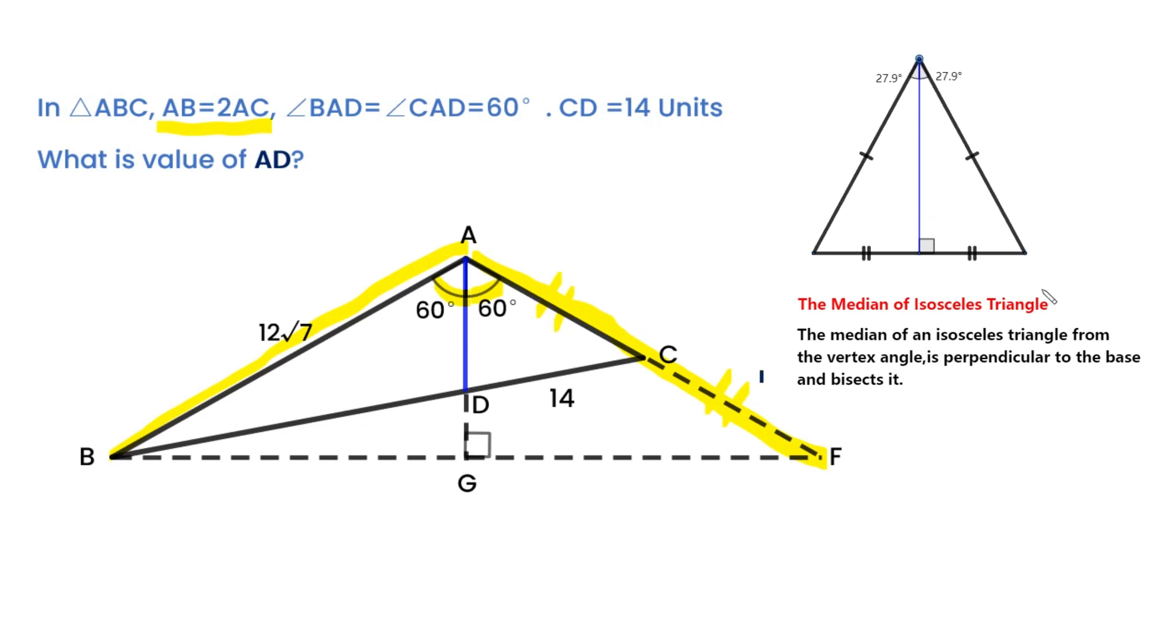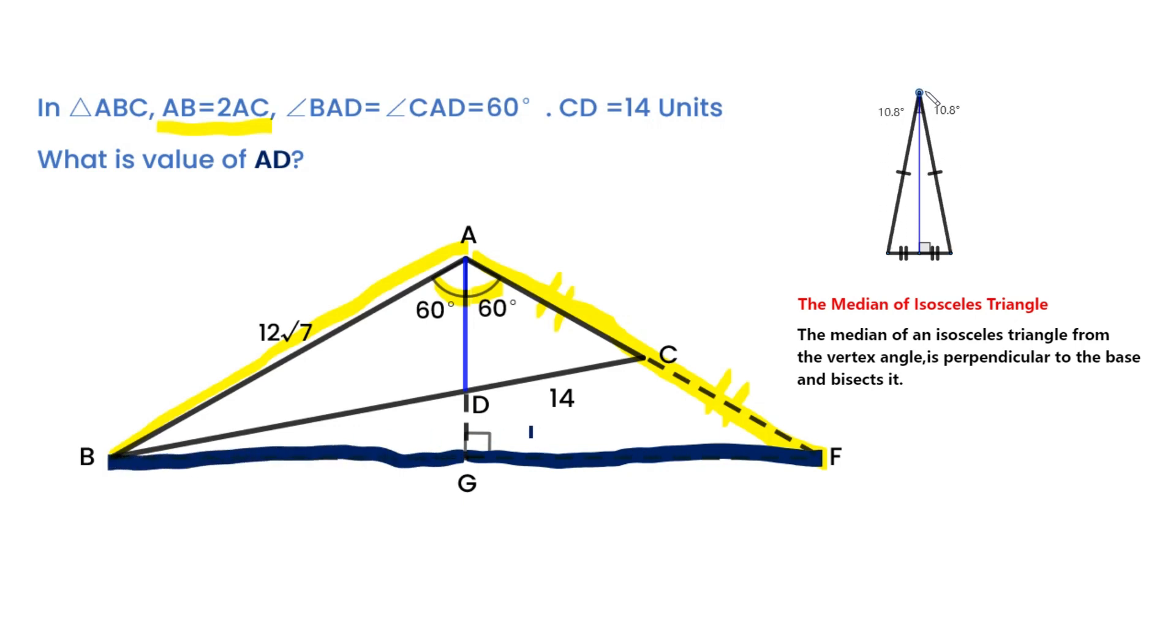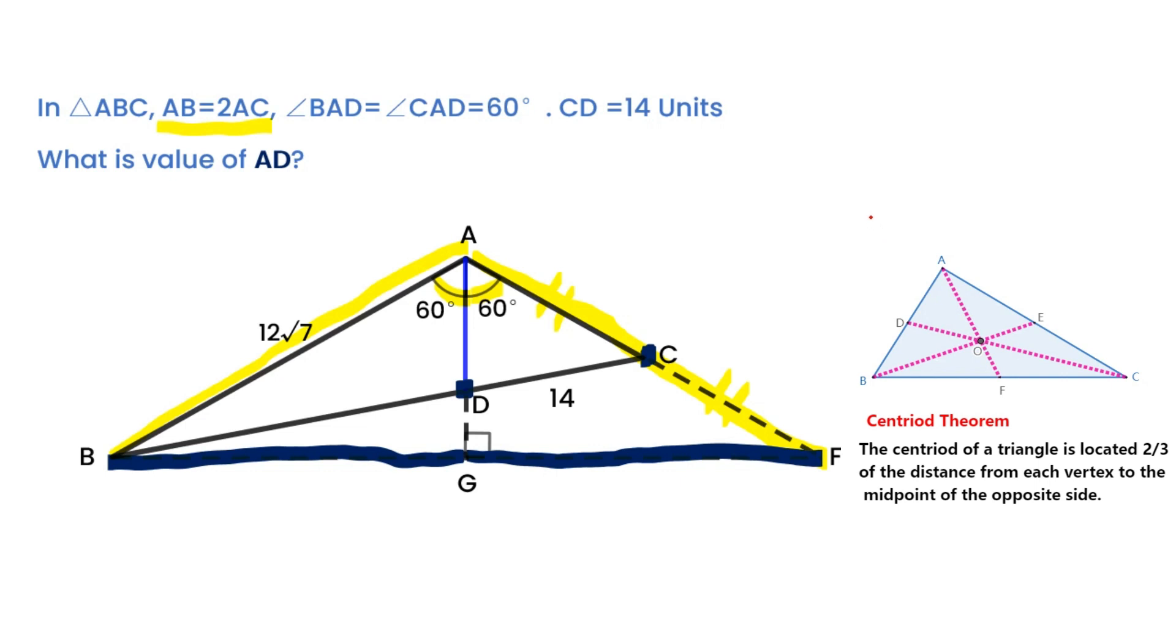AG is a bisector of triangle ABF. For median isosceles triangle theorem, AG is the median of isosceles triangle ABF. So point G is midpoint of BF. Point C is midpoint of AF. Let's focus on point D. We can conclude D is the centroid of triangle ABF. From centroid theorem, we can get AD equal to 2 over 3 times AG.